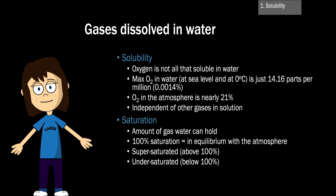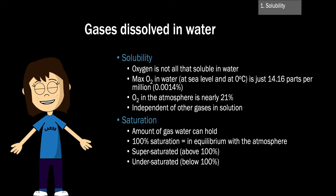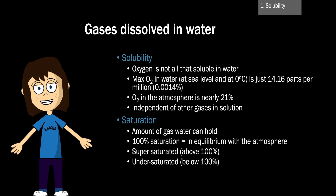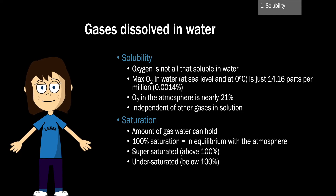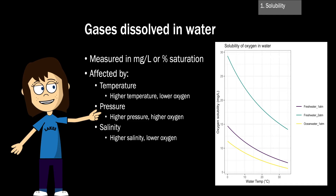In addition to the term solubility, we also use the term saturation — the amount of gas water can hold. At 100% saturation, the gas concentration in the water would be in equilibrium with the atmosphere. So in a freshwater lake at sea level and at zero degrees Celsius, if the oxygen concentration was 14.16 parts per million, that lake would be at saturation. If the concentration was higher, we would say the lake was supersaturated; if lower, the lake is undersaturated. We measure the concentration of oxygen in milligrams per liter, but we can also represent it as percent saturation, which sometimes makes more sense when thinking about biological processes.